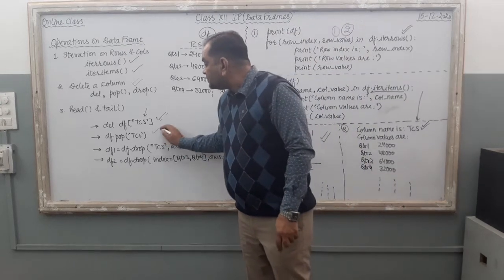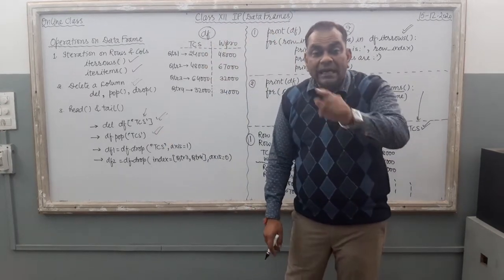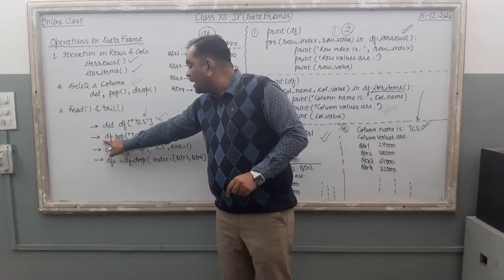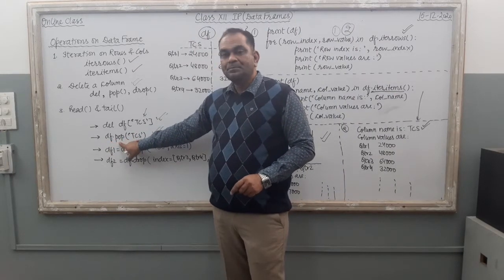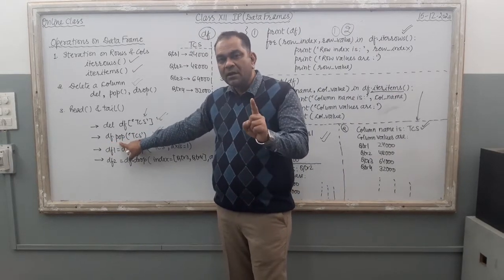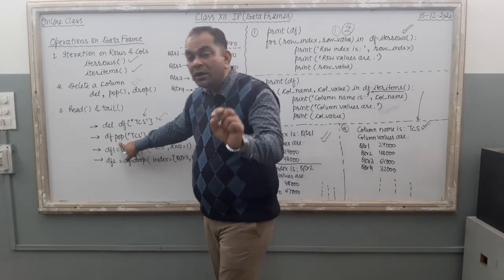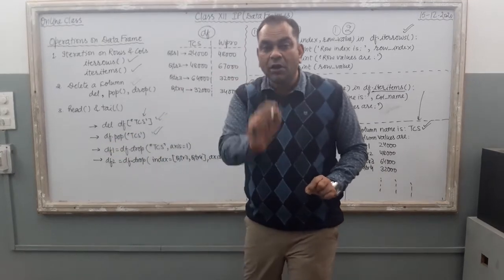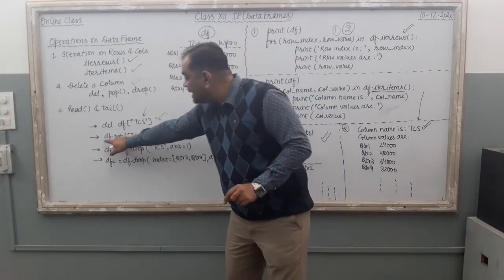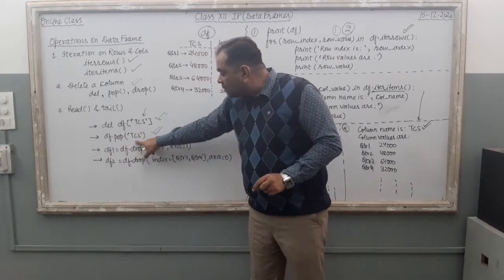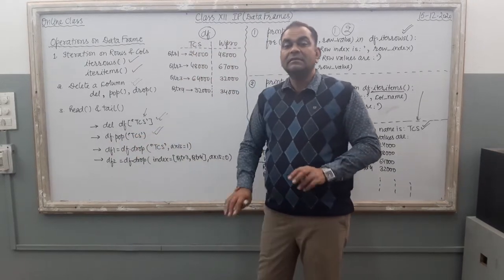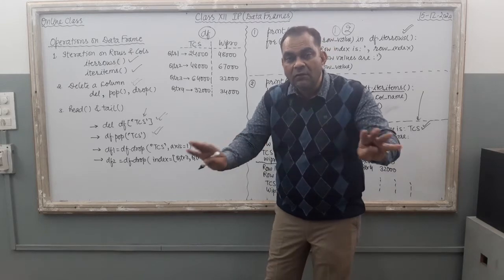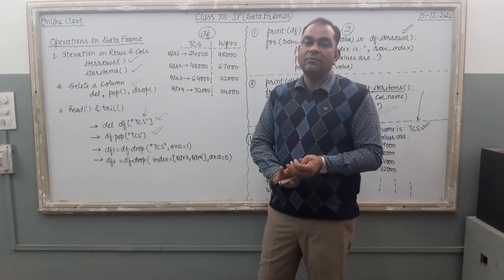Now see the second command. If you want to delete the same column using the pop function, the command is df.pop('TCS'). Pop is a function, so you connect it with the DataFrame using dot notation: df.pop('TCS'). The same thing will happen — the TCS column will be deleted from the DataFrame.